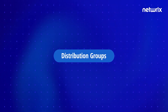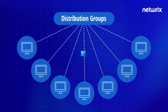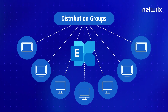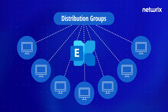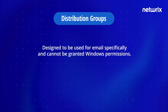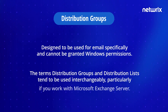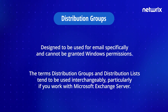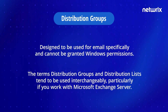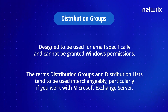Distribution groups are designed to combine users together so you can send emails via Microsoft Exchange Server collectively to a group rather than individually to each user. Distribution groups are designed to be used for email specifically and cannot be granted Windows permissions. The terms distribution groups and distribution lists tend to be used interchangeably, particularly if you work with Microsoft Exchange Server, and administrators should not let this trip them up.